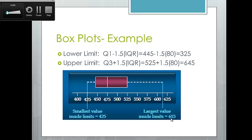In a box-and-whisker plot, you would have an outlier if something were outside of the lower or upper limit. Here, the dashes didn't extend further because there were no outliers — the lower limit was $325 and the cheapest rent was $425, and the upper limit was $645 and the most expensive rent was $615. The first quartile is $445, the third quartile is $525, and the median is located at $475.